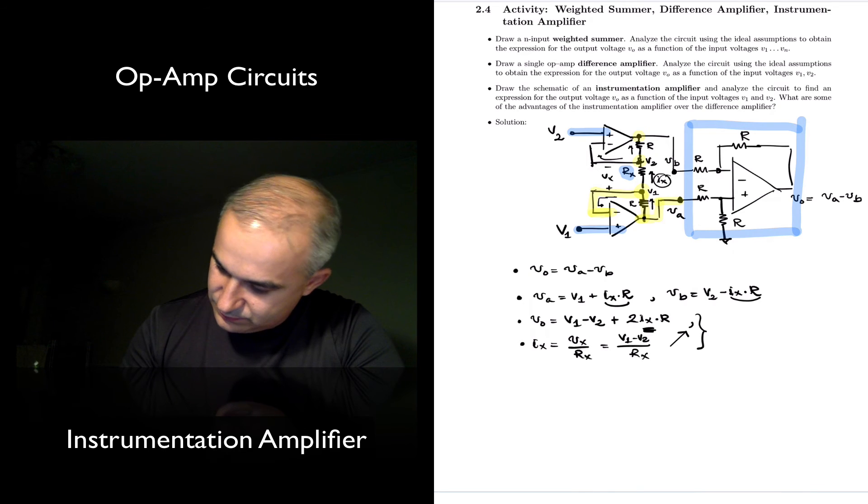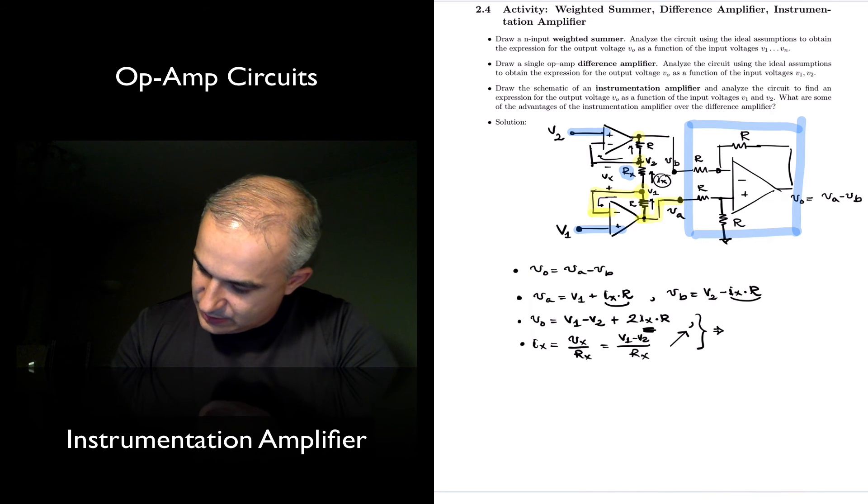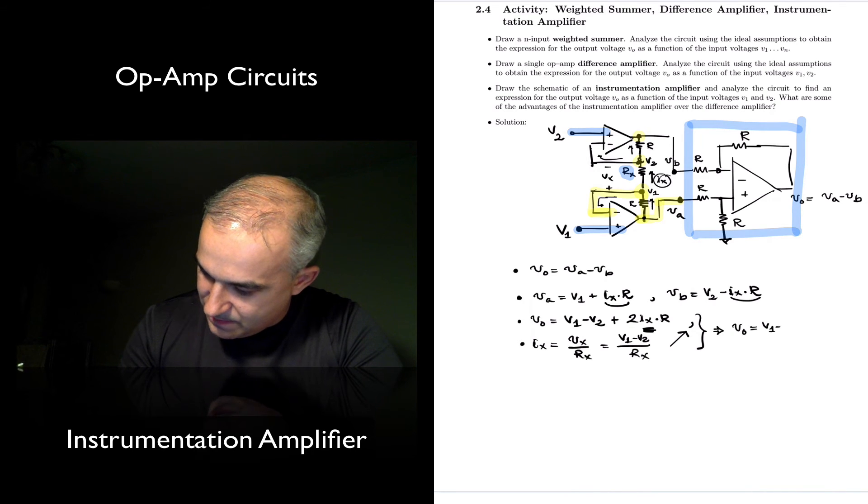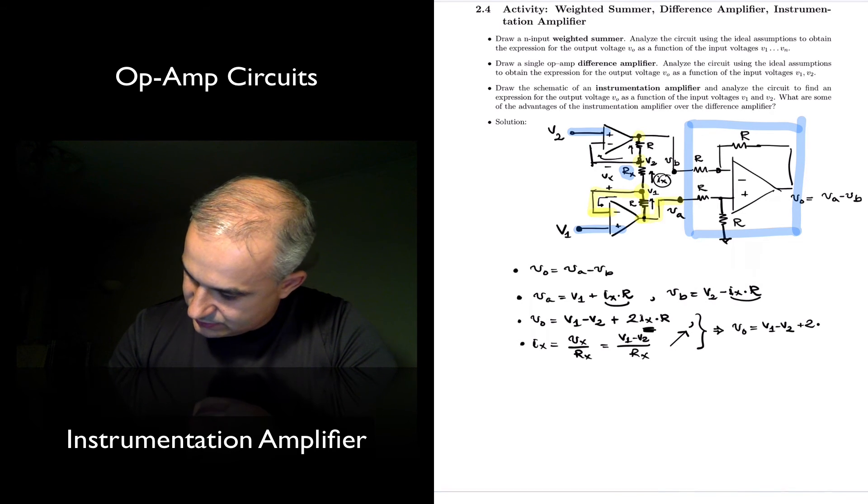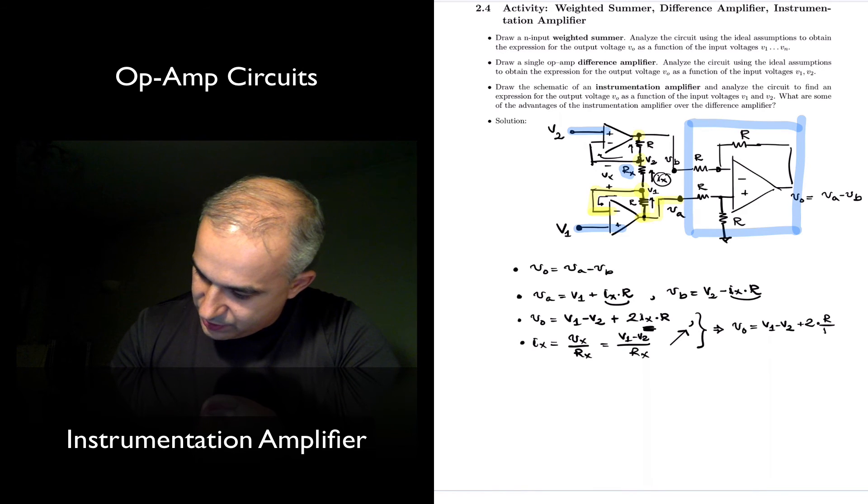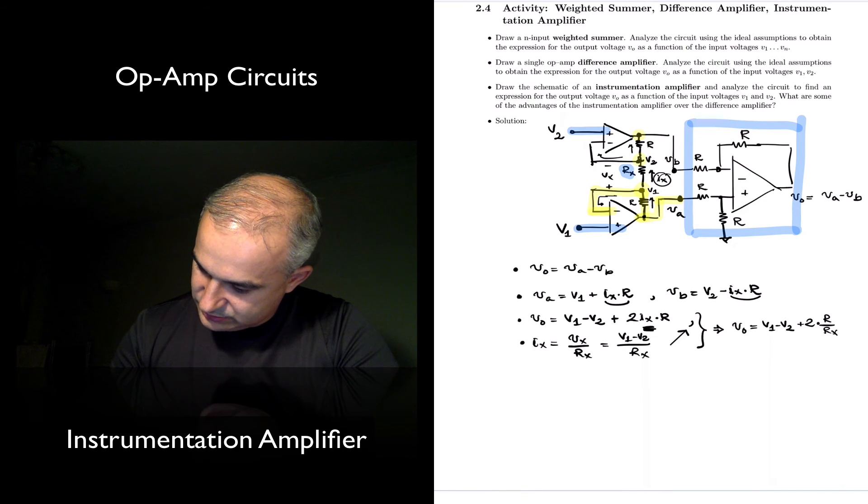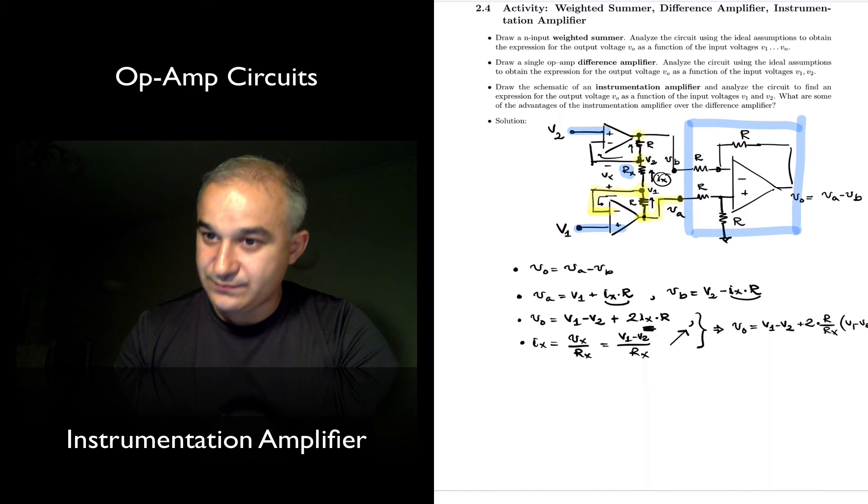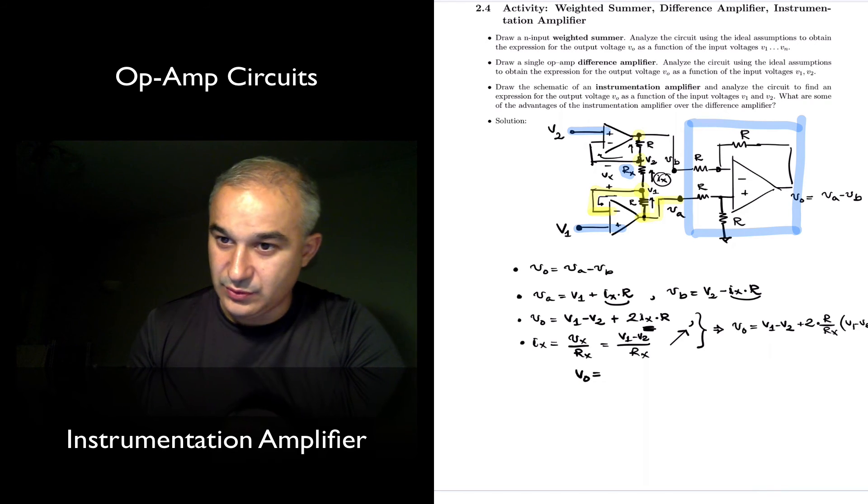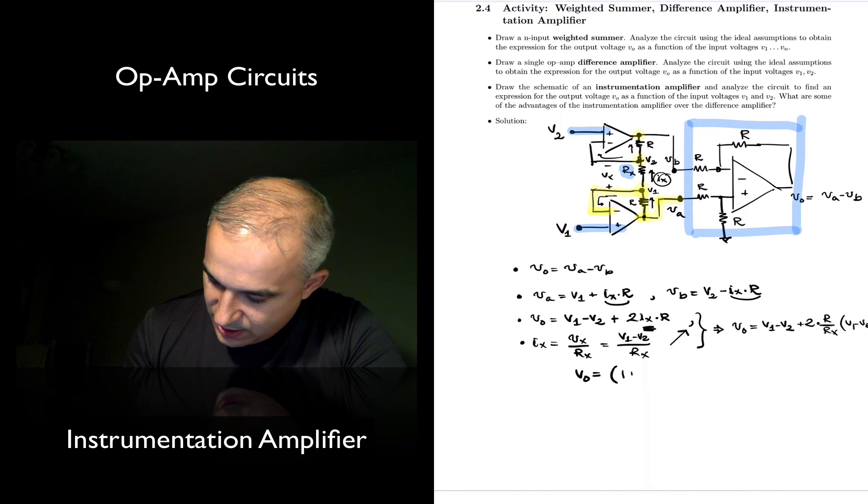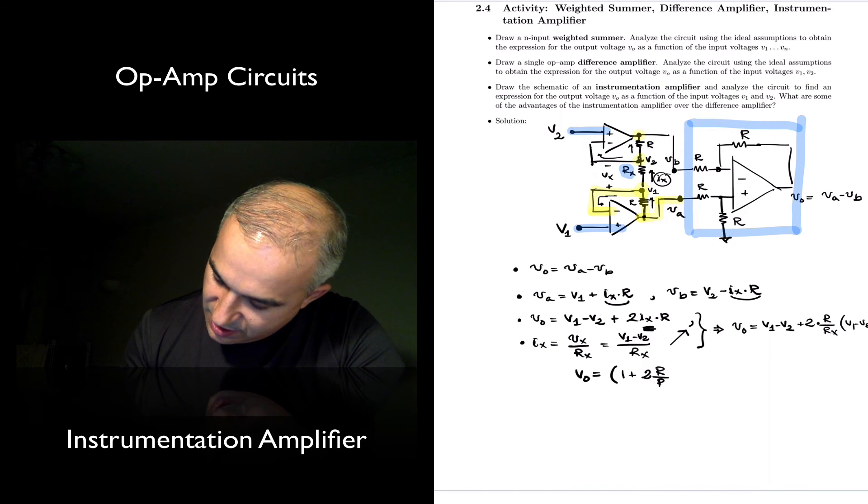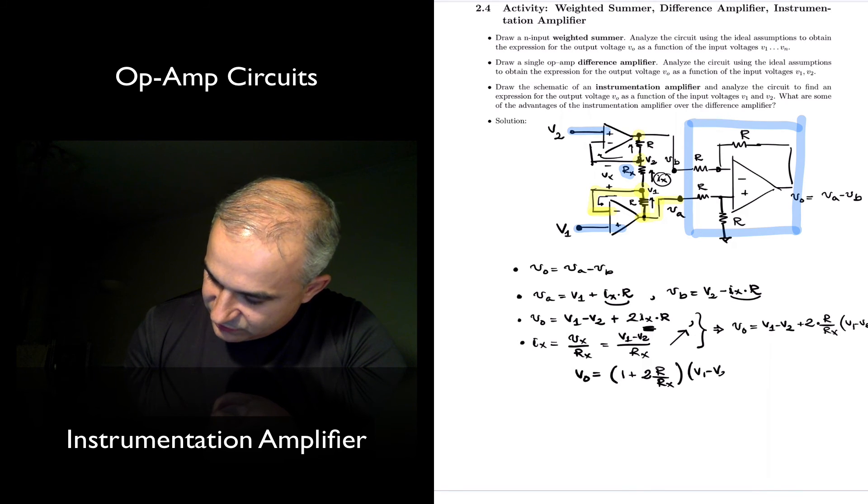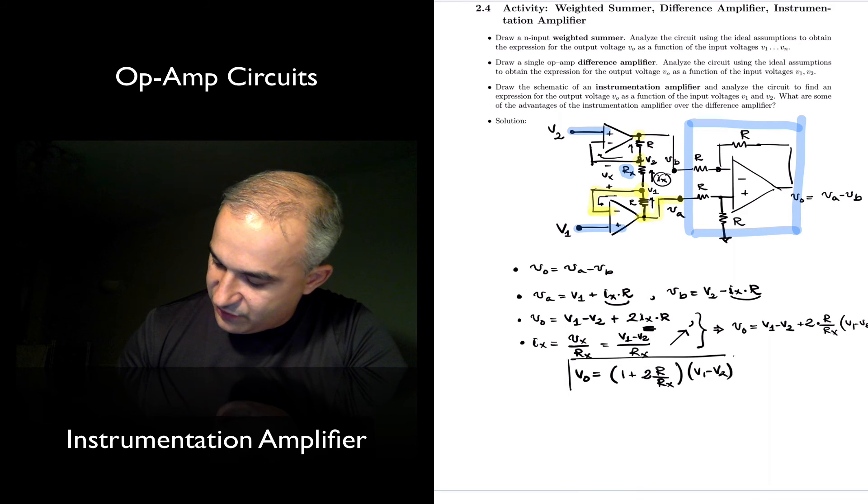We're going to get that the V output is equal to V1 minus V2 plus 2 times R over Rx, V1 minus V2. That the output voltage is equal to 1 plus 2R divided by Rx, V1 minus V2, and we arrive at the solution.